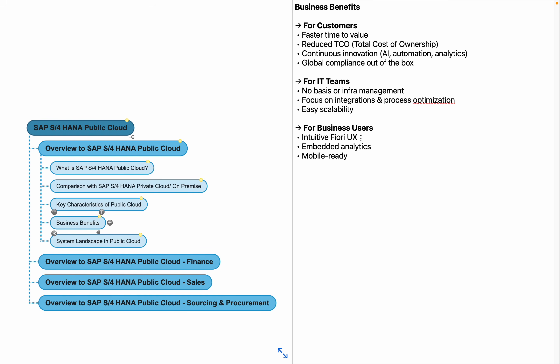From the business user perspective, everything is available via Fiori — no more traditional GUI or transaction codes. SAP S4HANA public cloud is completely built on the Fiori platform, which is easy and simple to use. It also provides embedded analytics features — many built-in reports and analytics are available pre-built within the system, with no need for a separate BW or BI system. It is also mobile-ready, so approvals and tasks can be performed directly from mobile devices.